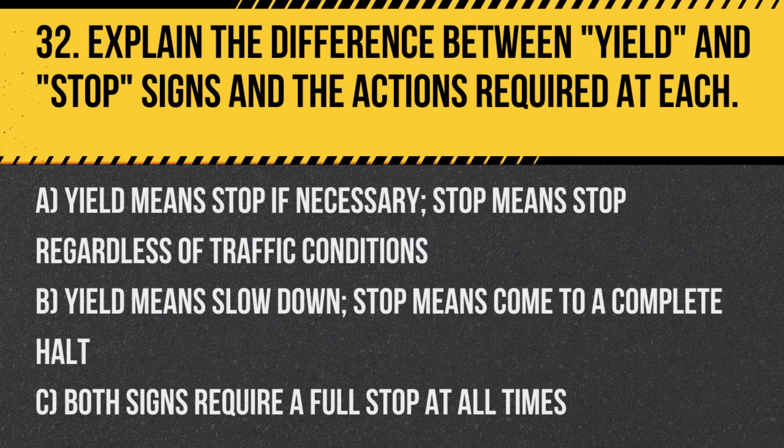Question 32: Explain the difference between yield and stop signs and the actions required at each. A. Yield means stop if necessary; stop means stop regardless of traffic conditions. B. Yield means slow down; stop means come to a complete halt. C. Both signs require a full stop at all times. Answer: A. Yield means stop if necessary; stop means stop regardless of traffic conditions. Understanding the difference ensures compliance with traffic laws and safety.